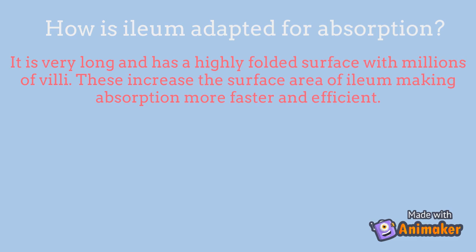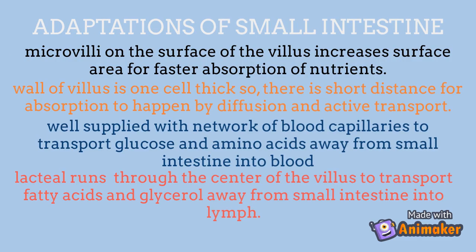The ileum is adapted for absorption by being very long and having a highly folded surface with millions of villi, increasing its surface area to make absorption faster and more efficient. There are also microvilli on the surface of the villi, which further increase the surface area for faster absorption of nutrients.